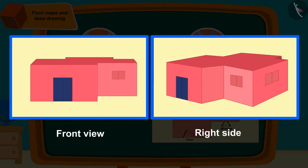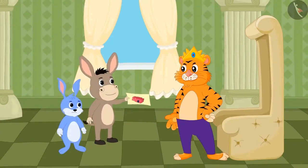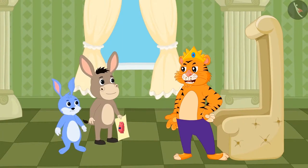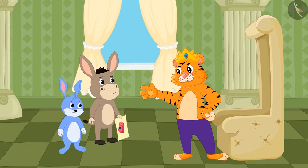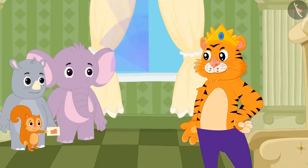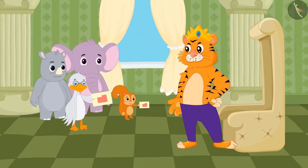The king liked the design made by Bholla, but he wanted to see some more designs by different people. The next day, Chanda and Babu Uncle Duck reached the king's court with their floor map and deep drawings.